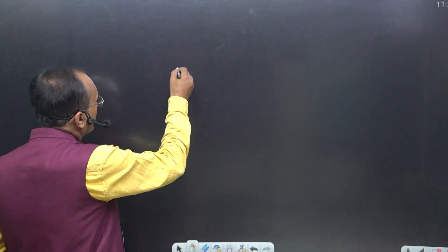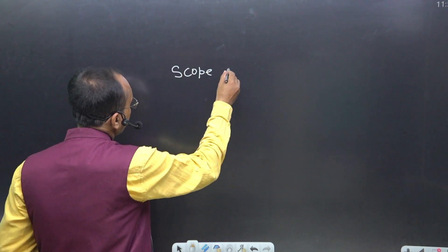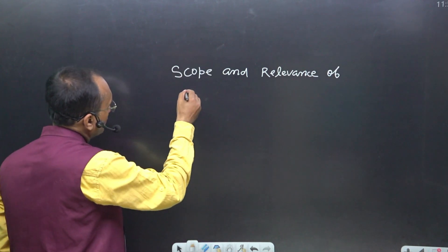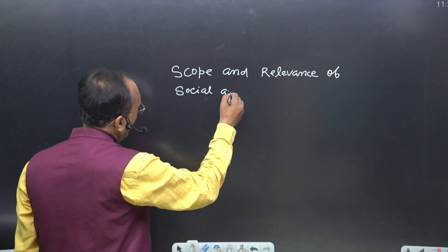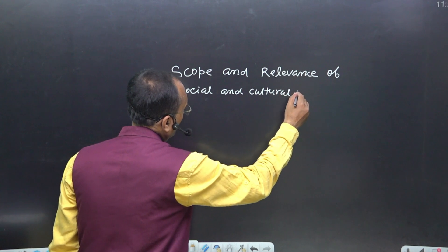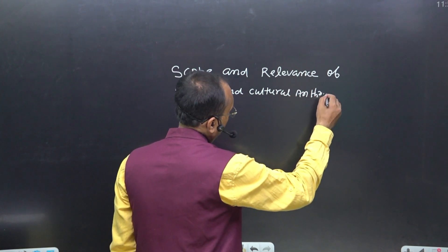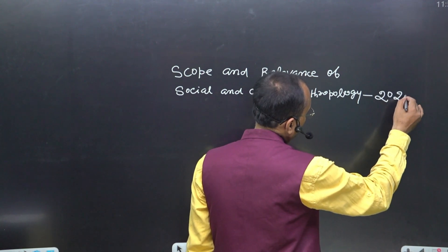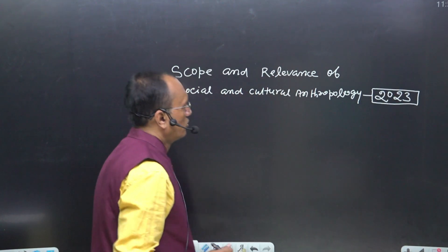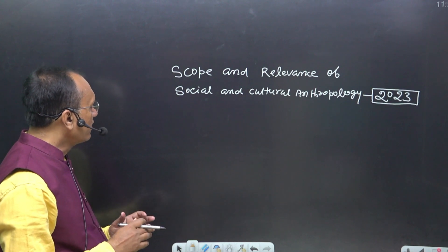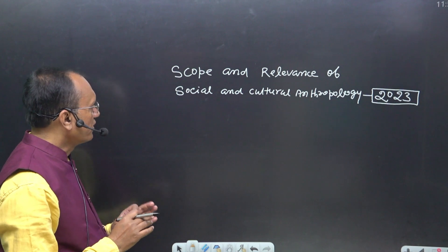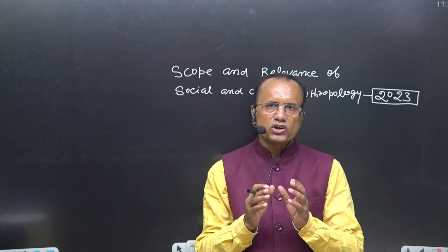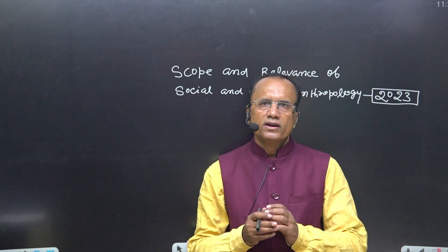We are going to understand about the scope and relevance of social and cultural Anthropology. This question was asked by UPSC in 2023. So how do we write and prepare the answer to this question? This question is related to topic 1.3, which is about branches of Anthropology.